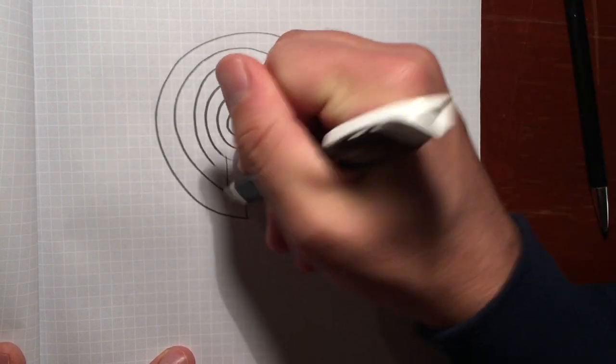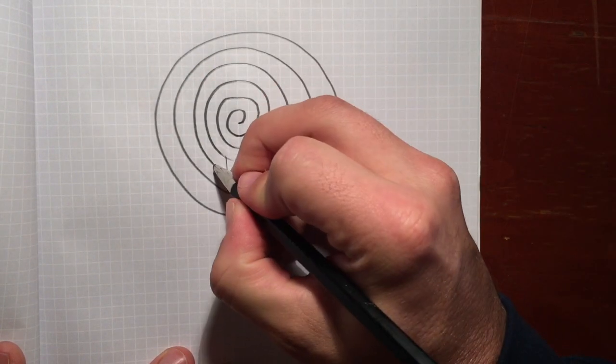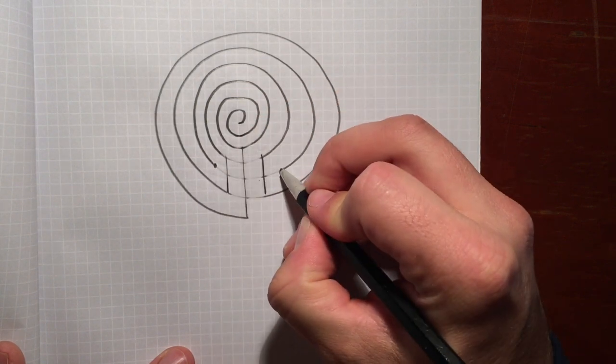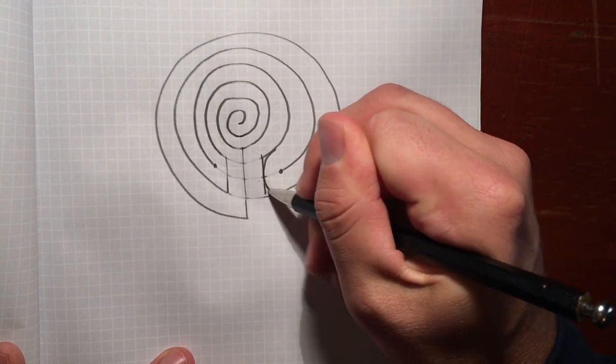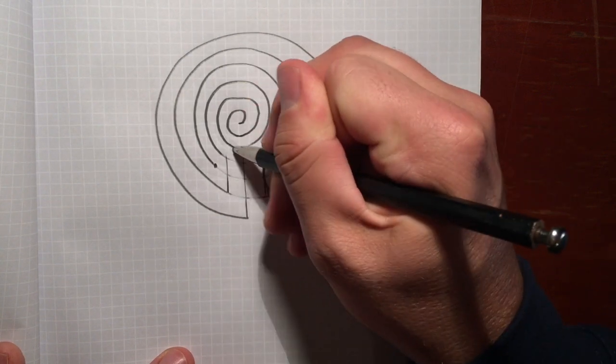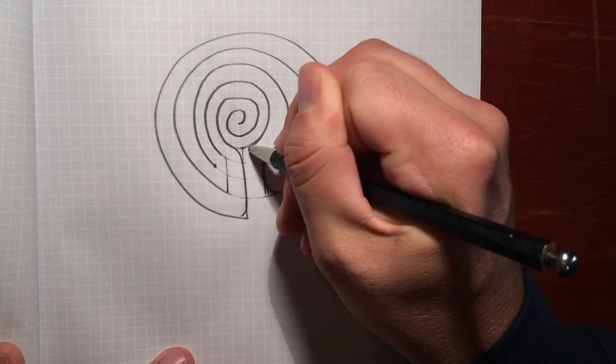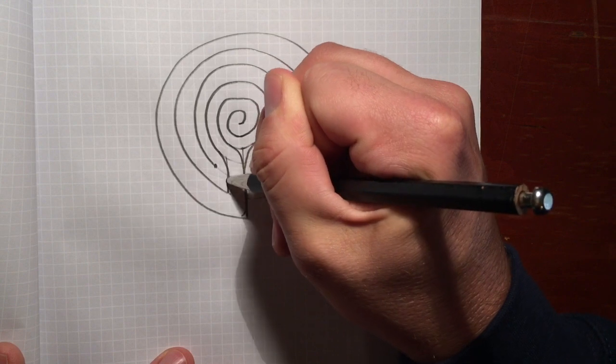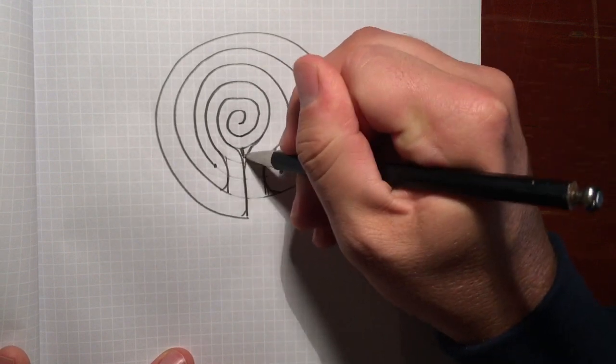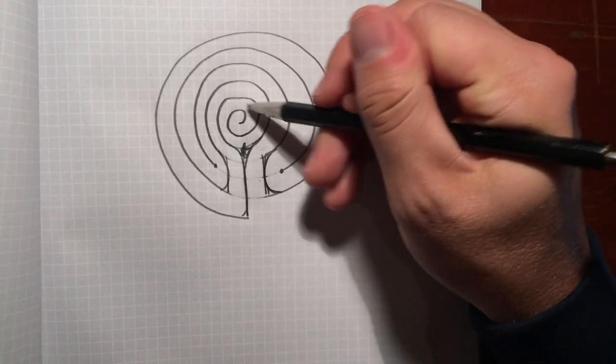Then actually what we've created is a five-circuit Chakravayu Labyrinth, which actually is meant to have a spiral center, so this ends up looking perfect.